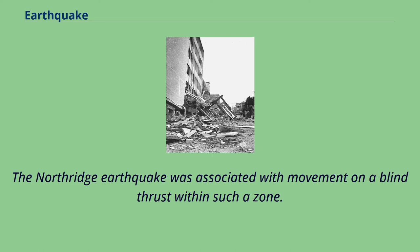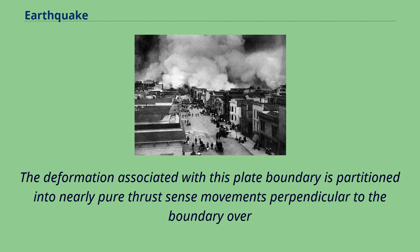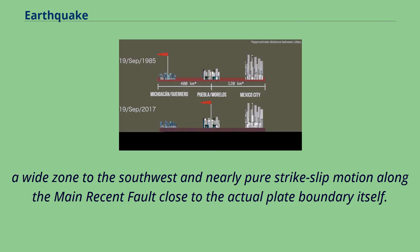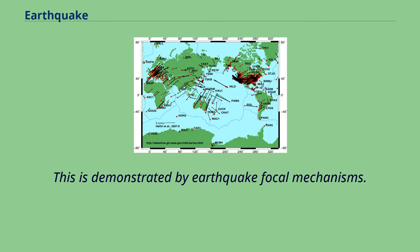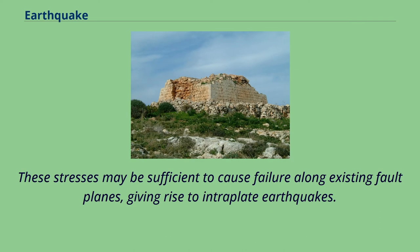The Northridge earthquake was associated with movement on a blind thrust within such a zone. Another example is the strongly oblique convergent plate boundary between the Arabian and Eurasian plates through the northwestern part of the Zagros Mountains, where deformation is partitioned into nearly pure thrust movements perpendicular to the boundary over a wide zone, and nearly pure strike-slip motion along the main recent fault close to the actual plate boundary. This is demonstrated by earthquake focal mechanisms. All tectonic plates have internal stress fields caused by their interactions with neighboring plates and sedimentary loading or unloading, and these stresses may cause intraplate earthquakes.